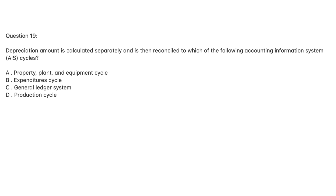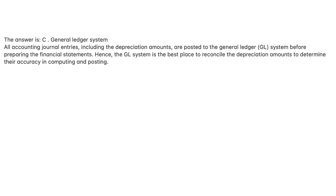Question 19. Depreciation amount is calculated separately and is then reconciled to which of the following AIS cycles? A. Property, plant, and equipment cycle. B. Expenditures cycle. C. General ledger system. D. Production cycle. The answer is C, general ledger system. All accounting journal entries, including the depreciation amounts, are posted to the general ledger, GL, system before preparing the financial statements. Hence, the GL system is the best place to reconcile the depreciation amounts to determine their accuracy in computing and posting.